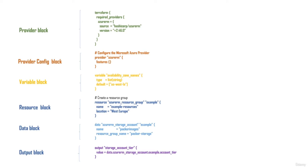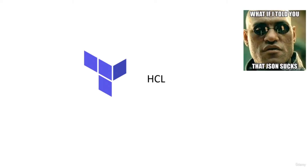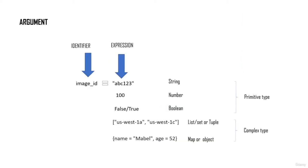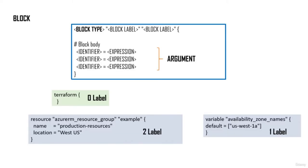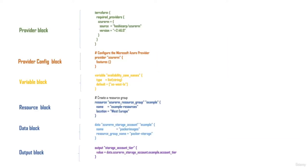A complete Terraform configuration file consists of a provider block, provider configuration block, variable block, resource block, data block, and output block — each of which I'll teach in subsequent lectures. Your entire configuration file is basically a set of blocks. To reiterate: HCL consists of arguments and blocks. An argument has an identifier and expression. A block has a block type, a set of block labels based on type, and within it a set of arguments. Each Terraform configuration file is a set of blocks.